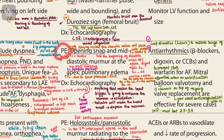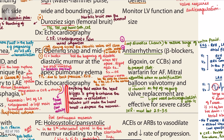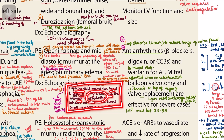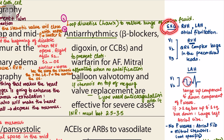From First Aid Step 2 CK: there is an opening snap and a mid-diastolic murmur at the apex, and pulmonary edema from backflow of blood. On echocardiography, the transmitral flow velocity is increased — just as narrowing a pipe increases jet velocity, the narrower the valve the higher the blood flow velocity. Anything that makes the heart bigger, such as exhalation, enhances the murmur; anything that makes the heart smaller, such as the Valsalva maneuver, depresses the murmur.